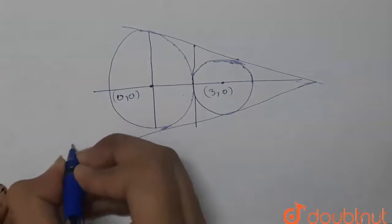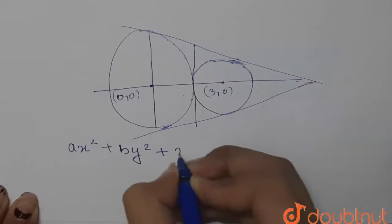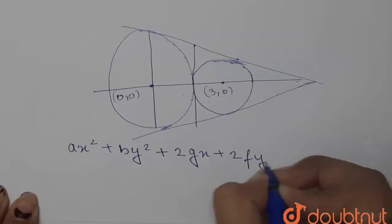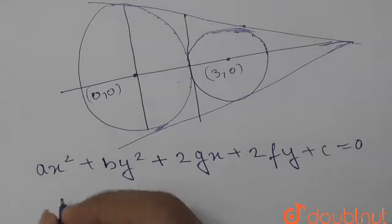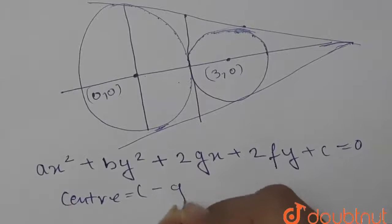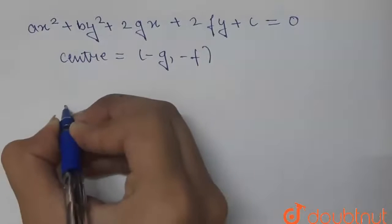That is ax² + by² + 2gx + 2fy + c = 0, and its center is given by (-g, -f). So therefore, now see the equation that was given to us.